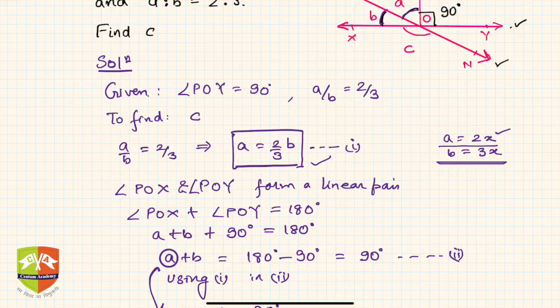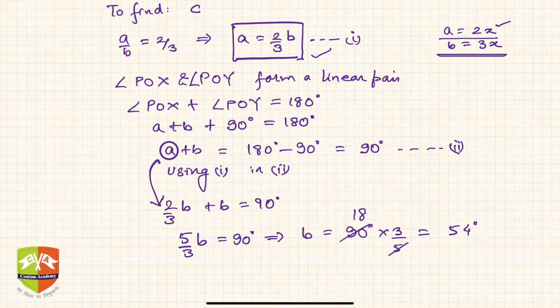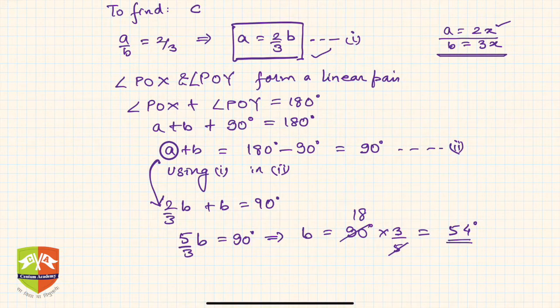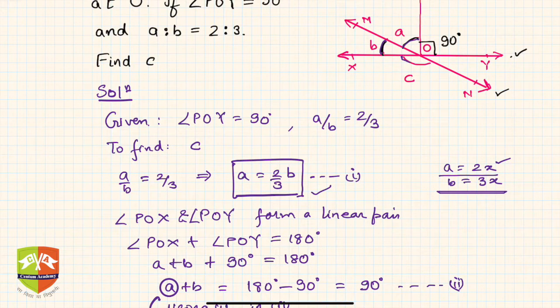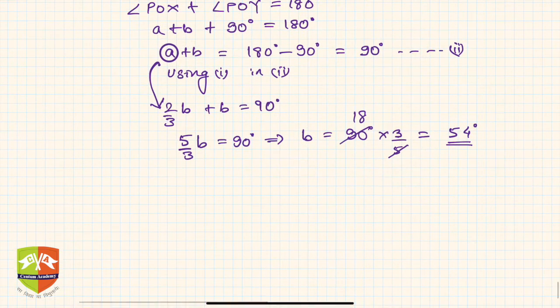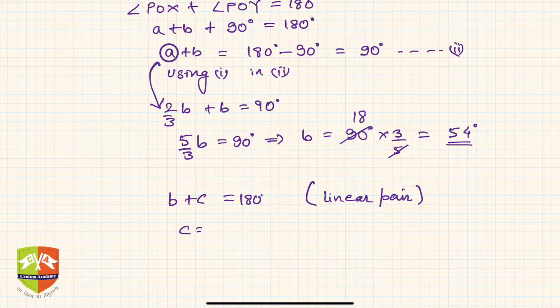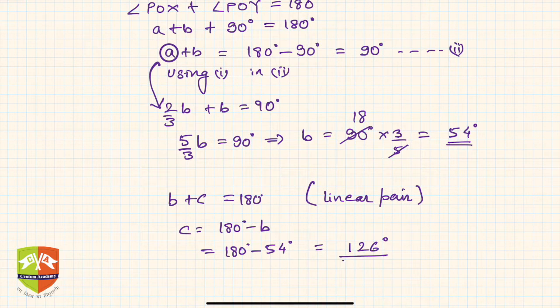Now basically you just wanted b. Now only b can help you find c. If you see in this figure, b plus c is again 180 degrees due to linear pair. That means c is equal to 180 degrees minus b, which equals 180 degrees minus 54 degrees, which is 126 degrees. This is the value of c.